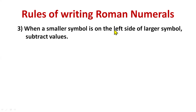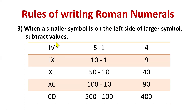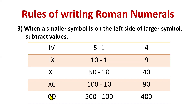But when the smaller symbol is on the left side of the larger symbol, subtract the values. For example, IV — I is on the left of V, so 5−1 = 4. IX means 10−1 = 9. XL means 50−10 = 40. XC means 100−10 = 90. CD means 500−100 = 400.